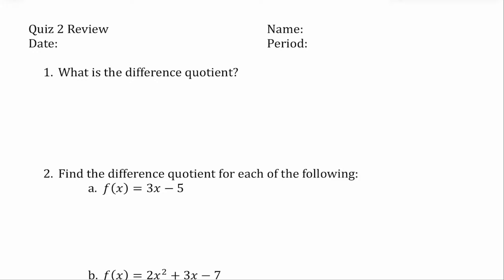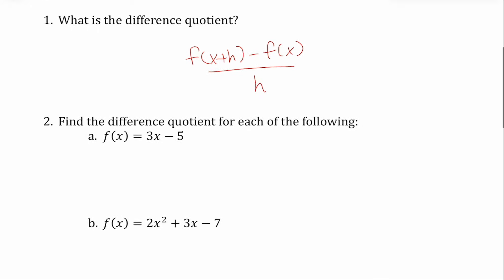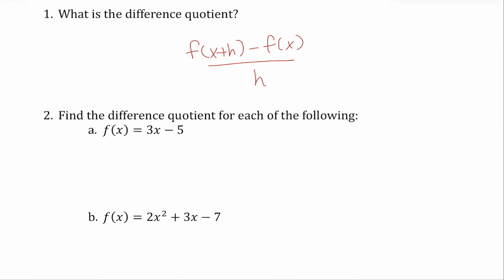Quiz two is going to cover average rate of change and the difference quotient, and will look like what you see here. This is a great study guide for the quiz. The first thing you have to tell me is the difference quotient — remember that's just f of x plus h minus f of x over h. You just have to have that memorized, because that's going to allow us to calculate the difference quotient we see in number two.